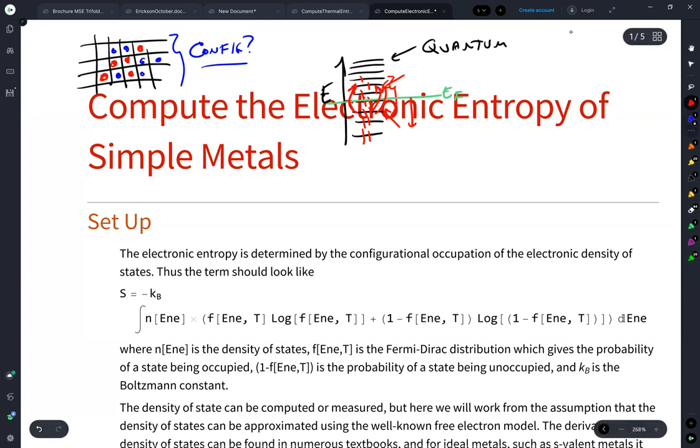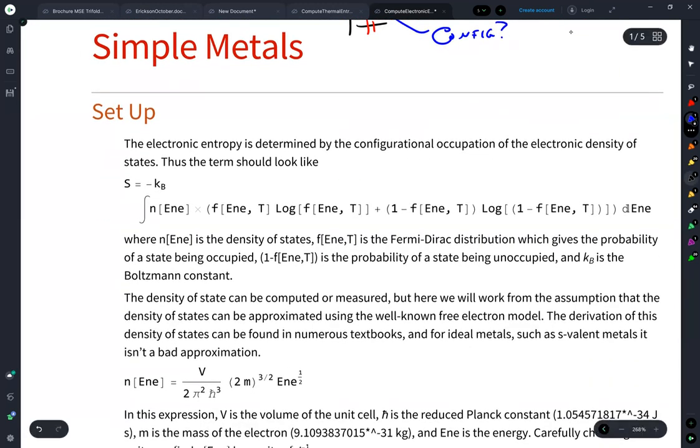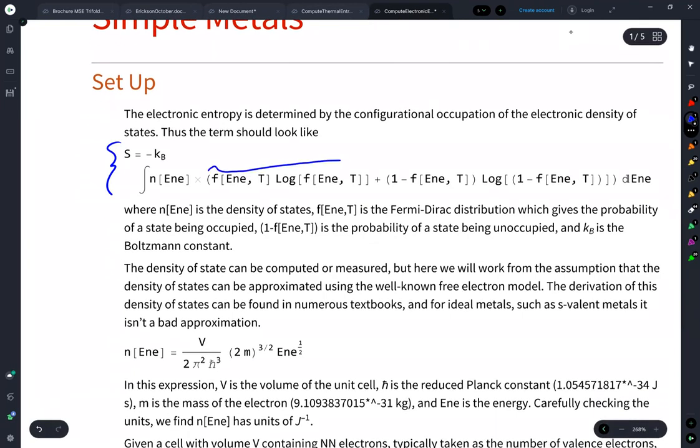So the question becomes, how many different ways can those be configured? So this is the expression that we have for the electronic contribution to the entropy. And this term, or these two terms, should look very similar to what you've seen for configurational entropy. This is the probability that a state is occupied times the log of the probability that it's occupied, plus the probability that a state is unoccupied times log of the probability that it is unoccupied.